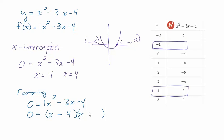And then I set each factor equal to zero and solve that. And add 4 to both sides, I get 4. Subtract 1 from both sides, I get negative 1. And there are my x-intercepts.